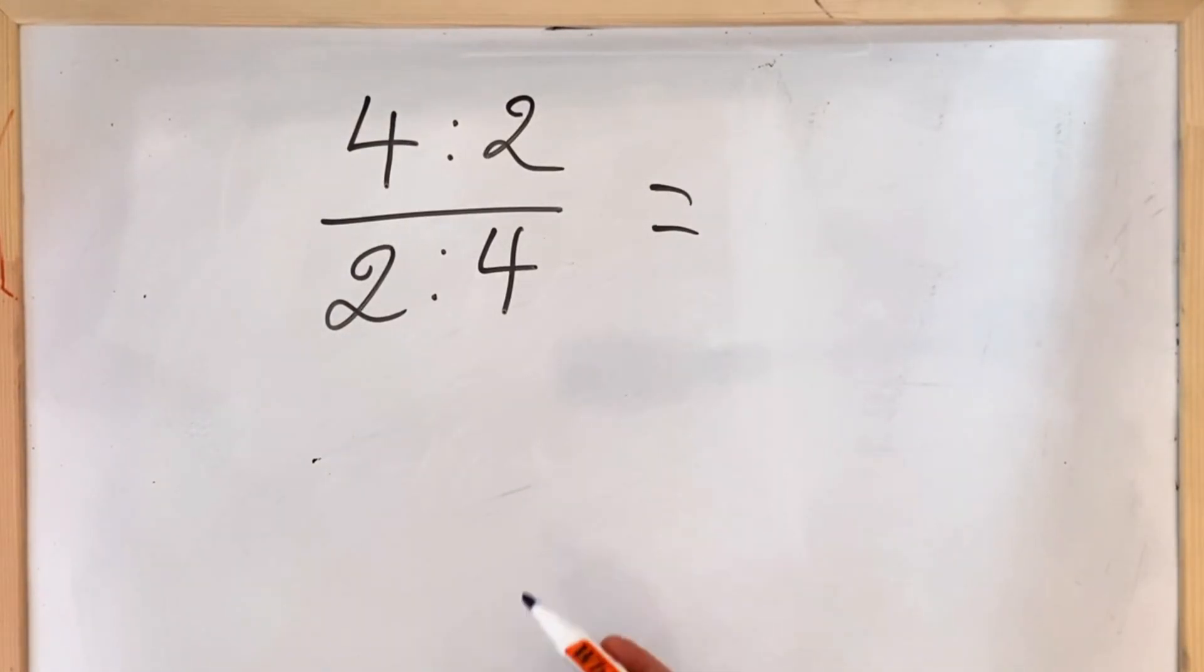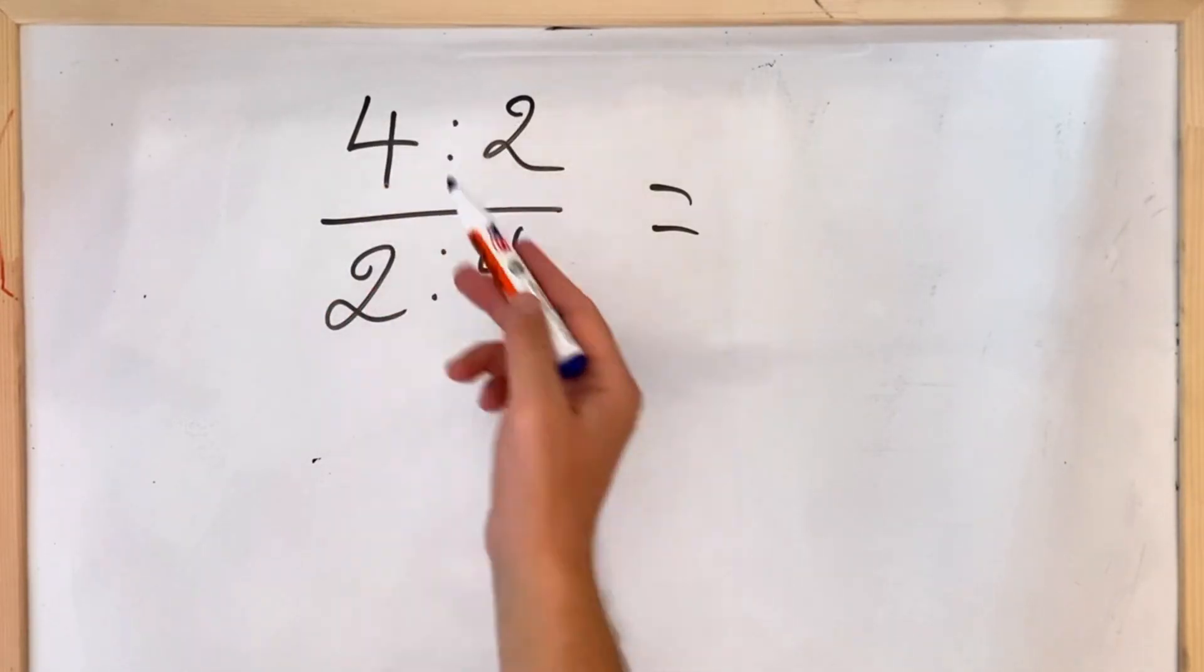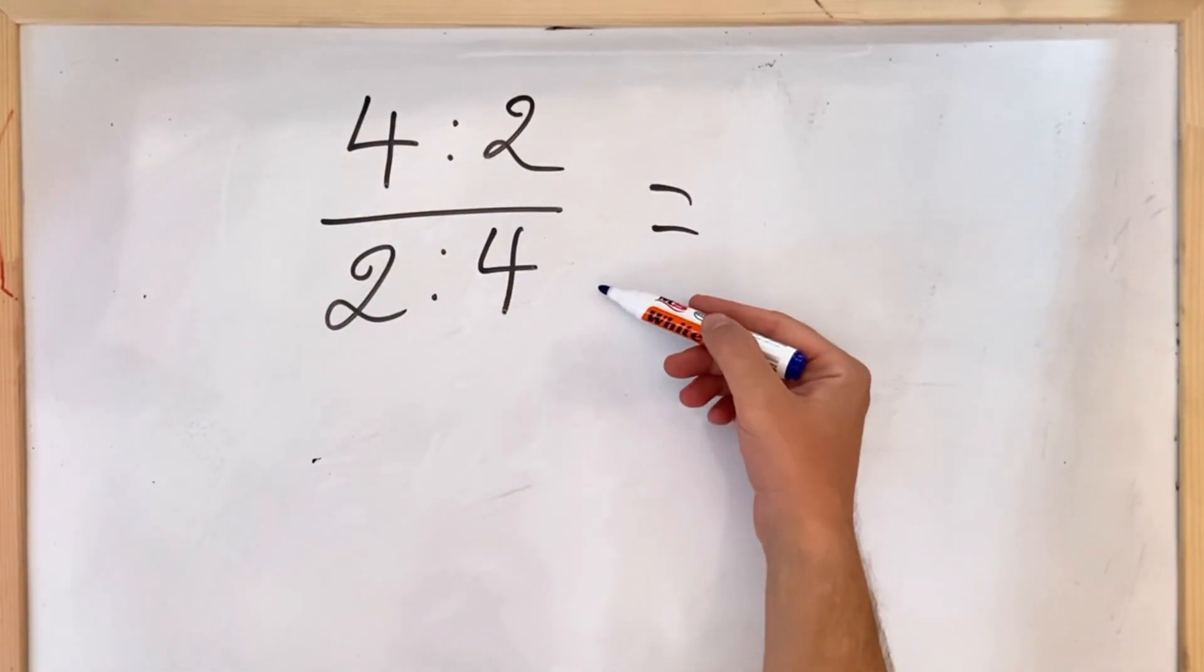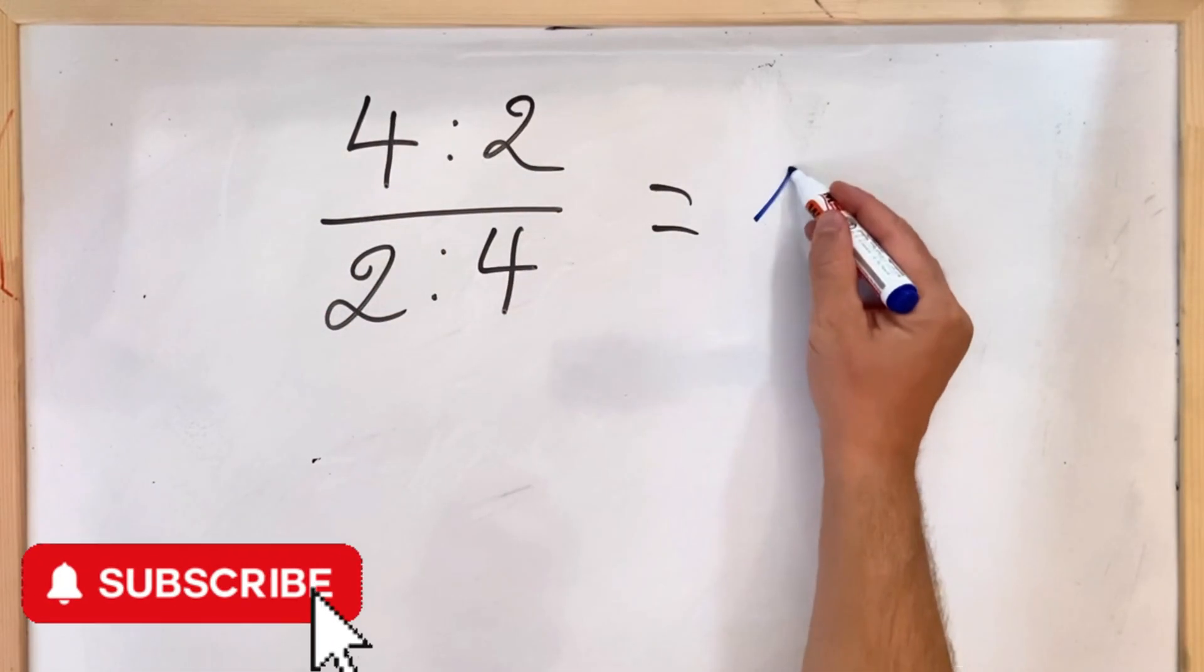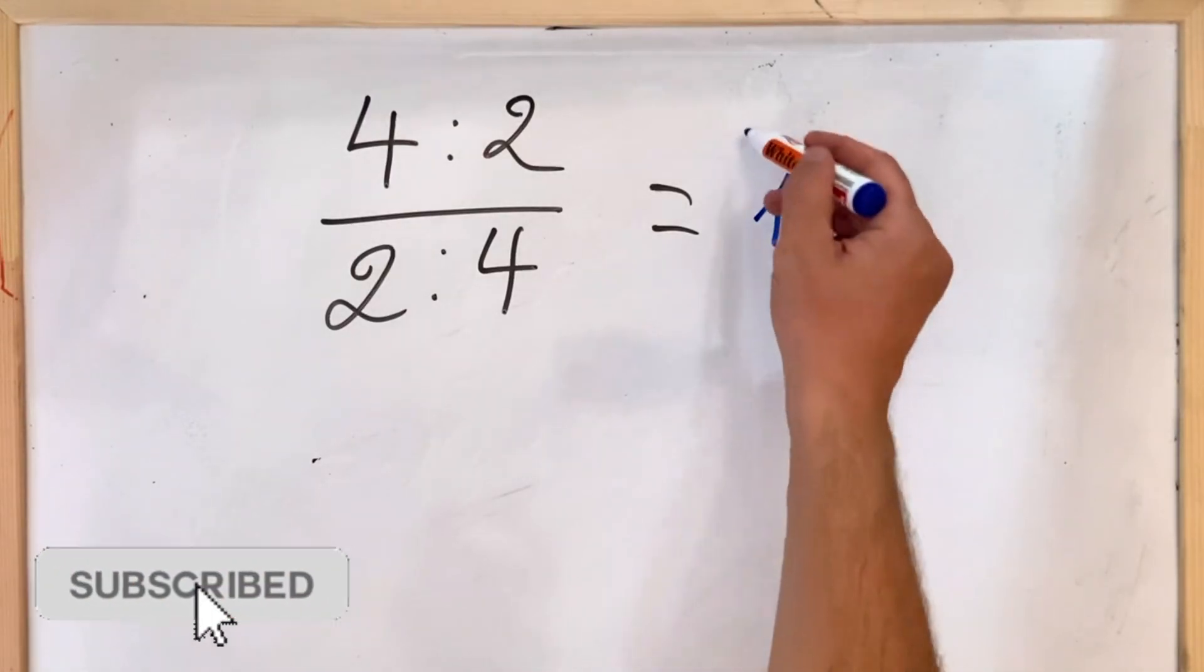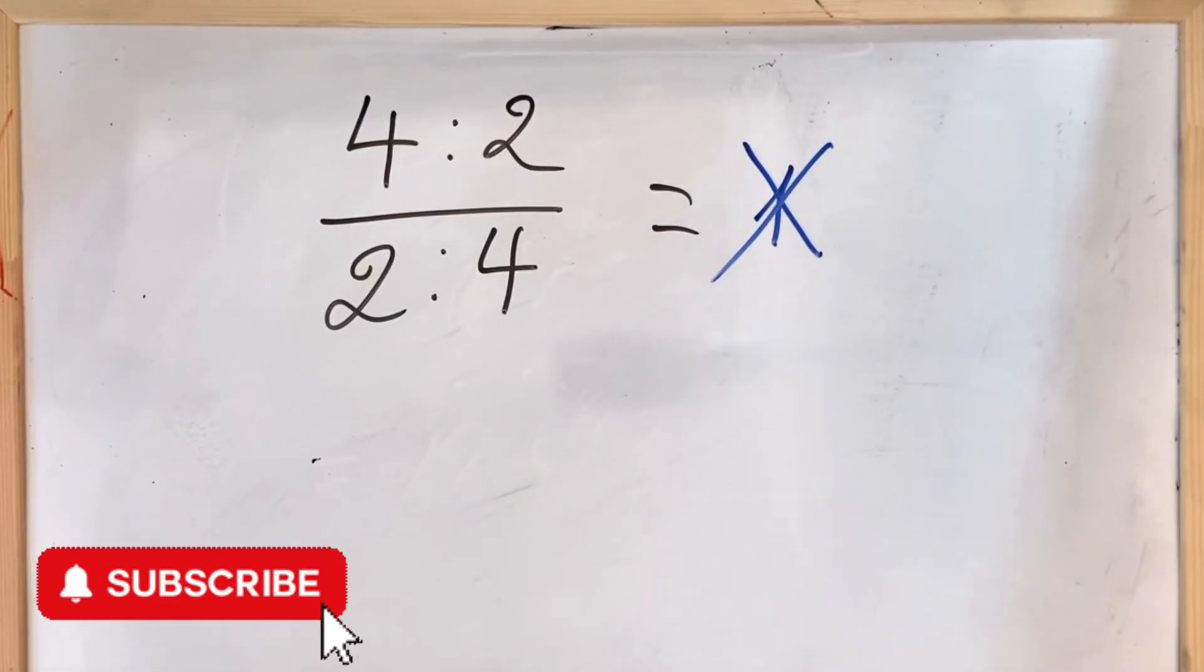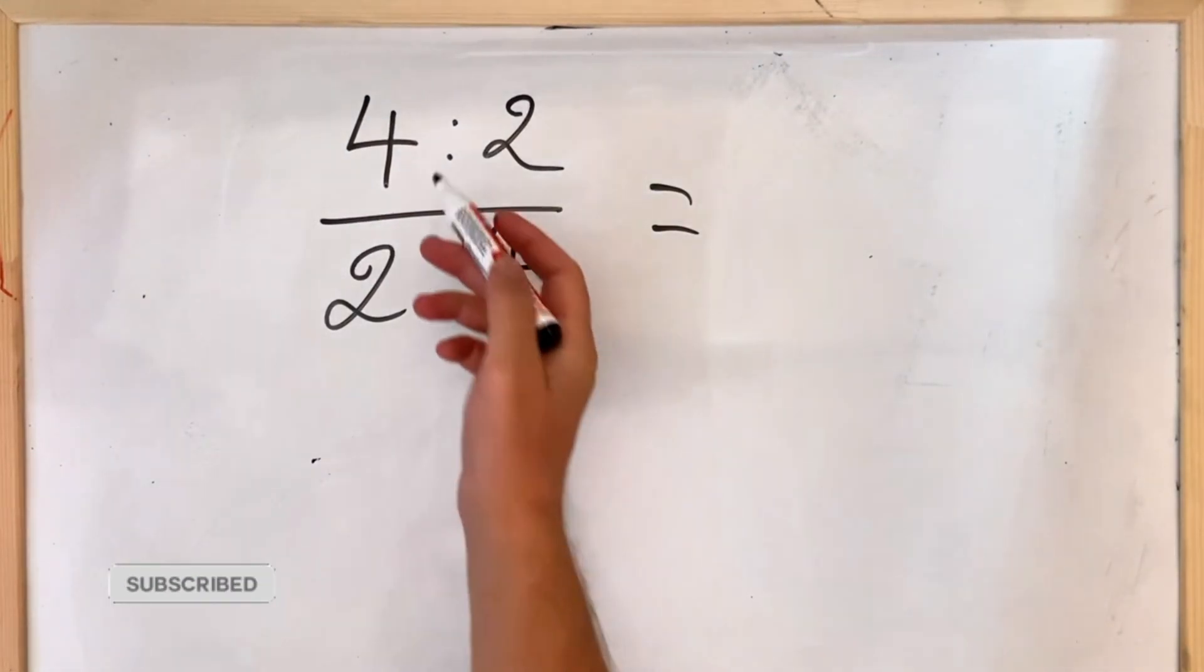Hello everyone, many people when they see such an equation they usually think that both sides, the numerator and denominator, are equal, so for them the solution would be one. But this of course is incorrect, we both see that this and this are different.